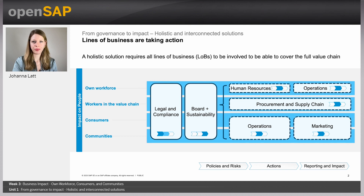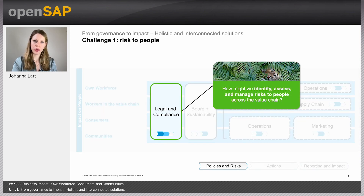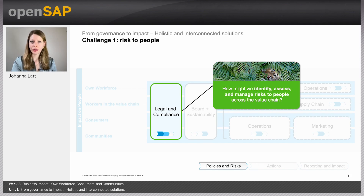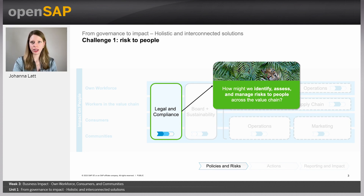In practice, there are currently a number of challenges, especially from a corporate perspective. Challenge number one is about the corporate level risk assessment. Many companies struggle with the identification, assessment, and management of the risks to people, as opposed to financial risk to the business. This connects to the topic of double materiality assessment that many regulations require, asking for risks to people and also the environment — and how IT can help quantify these.